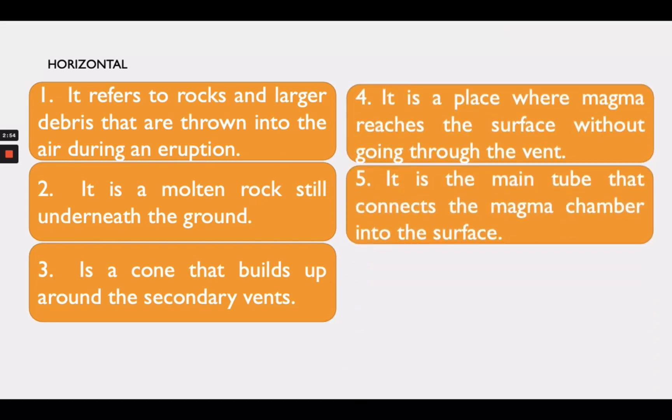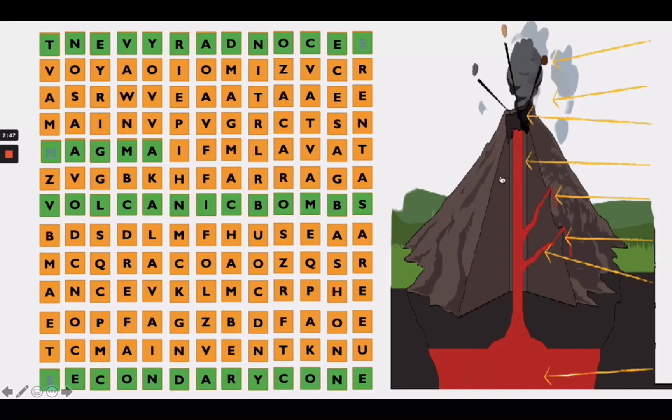Next question. It is the main tube that connects the magma chamber into the surface. Can you see the answer? Oh, it's there! Main vent is the answer. You're doing well! Great job!